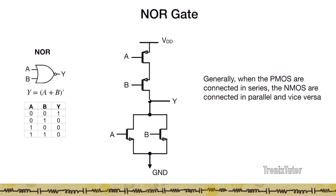Generally, when constructing CMOS gates, when PMOS transistors are connected in series the corresponding NMOS transistors tend to be connected in parallel, and vice versa. This is a very generic view that works in almost all cases, though later we'll see special cases where we can reduce gate area by removing some transistors. In general, when designing a CMOS gate, the PMOS and NMOS networks tend to be duals of each other — when something is in series in the PMOS it tends to be in parallel in the NMOS.